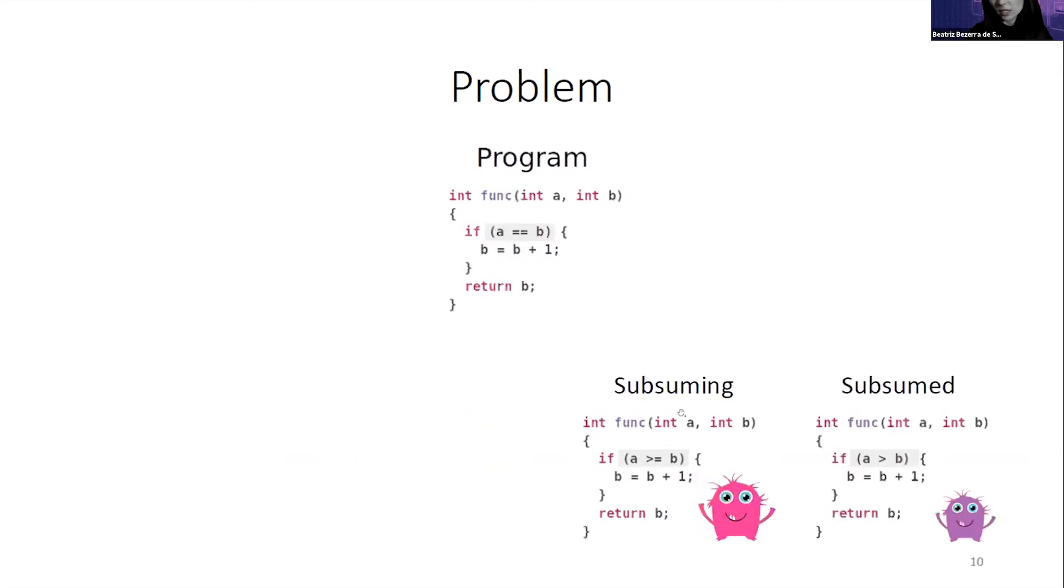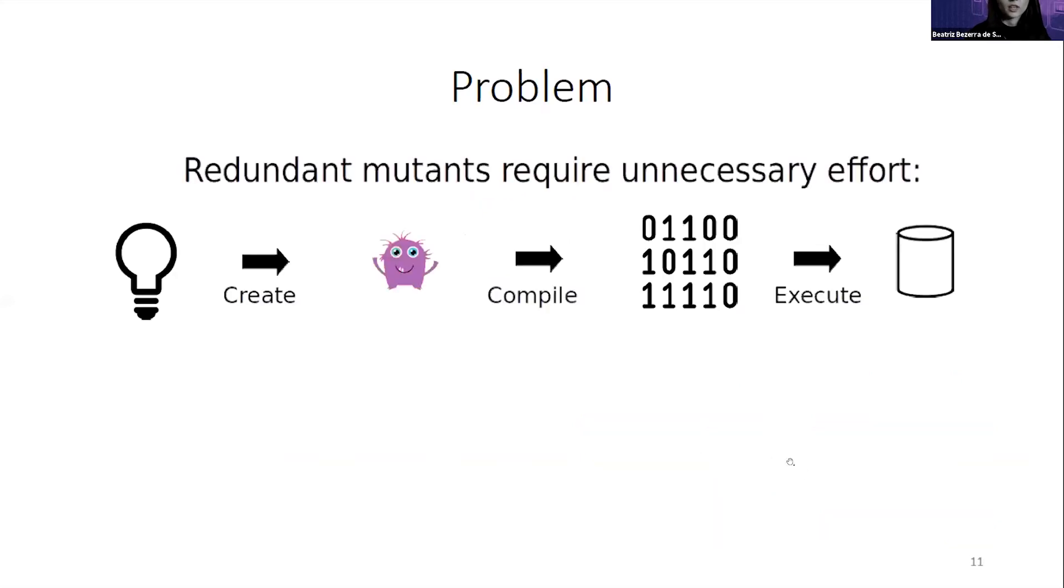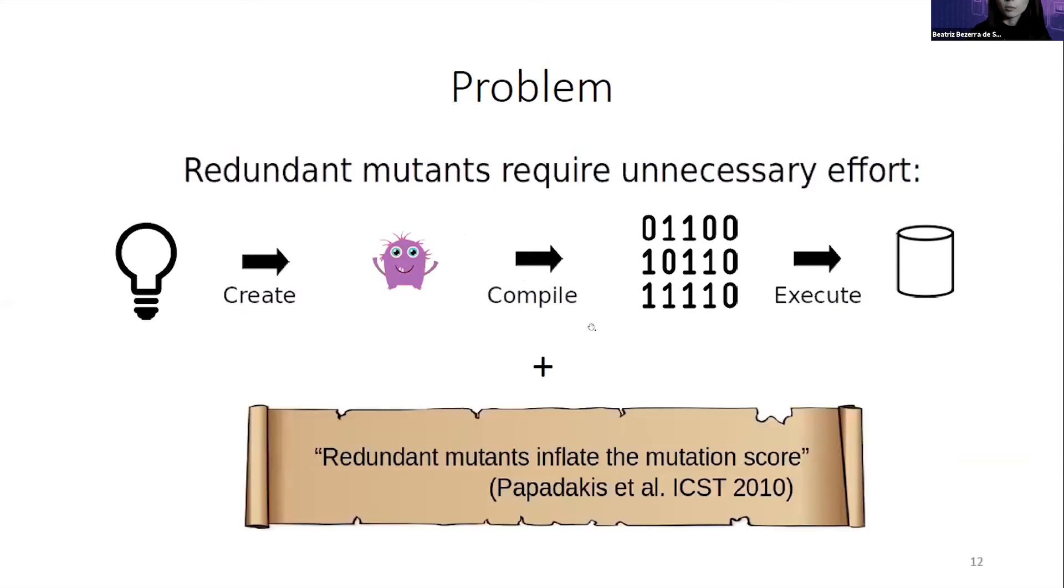And some mutants are subsumed. A mutation 1 subsumes a mutation 2 when the set of test cases that kills mutation 1 is a strict subset of the test cases that kills mutation 2. So whenever we kill mutation 1, we also kill mutation 2. Redundant mutants require unnecessary effort to create, compile, execute tests against them. Moreover, redundant mutants inflate the mutation score.